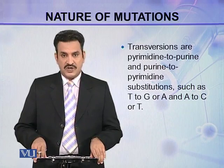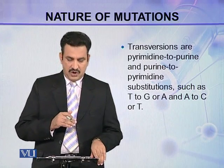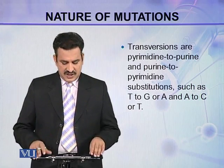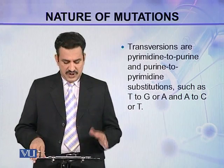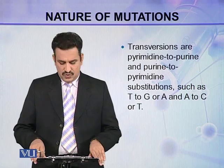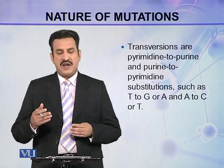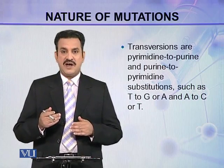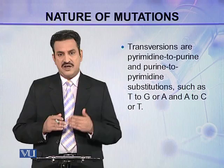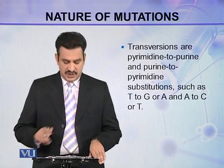Transversions are pyrimidine-to-purine or purine-to-pyrimidine substitutions, such as thymine to guanine or adenine, and adenine to cytosine or thymine. So a pyrimidine is replaced by a purine, or a purine is replaced by a pyrimidine. These mutations are called transversions.